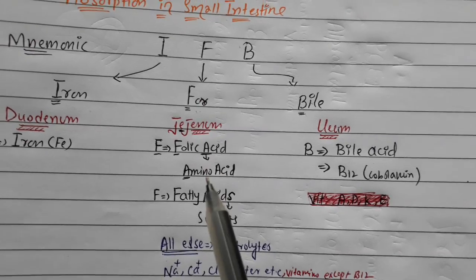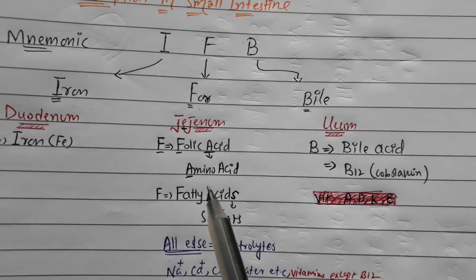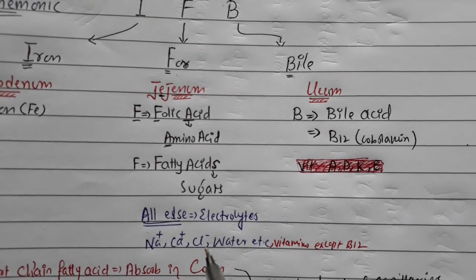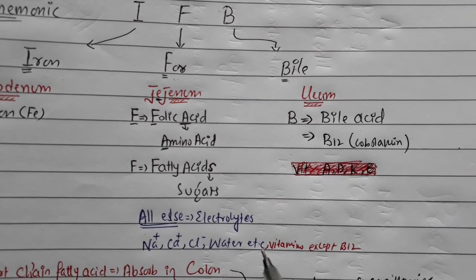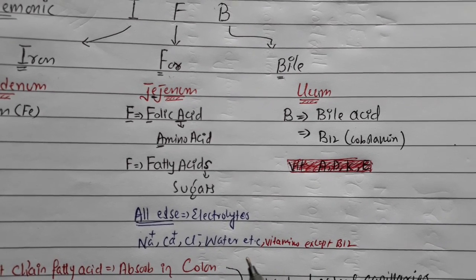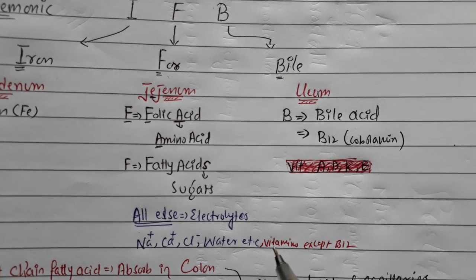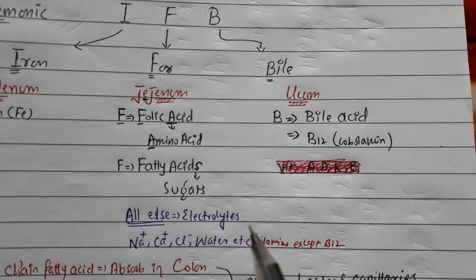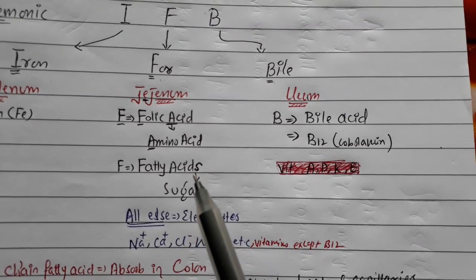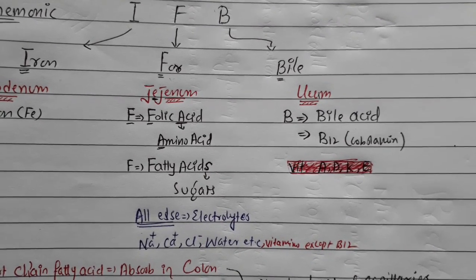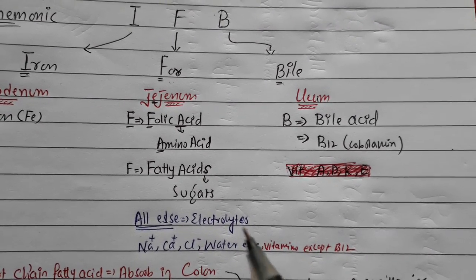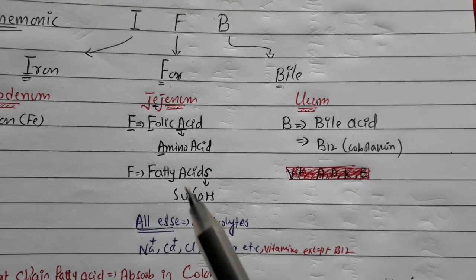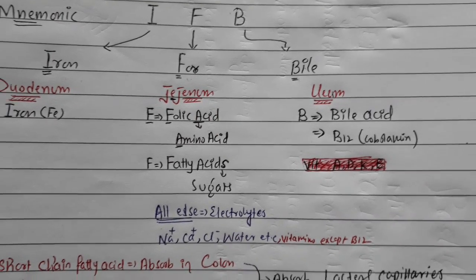Everything else — electrolytes like sodium, chloride, and potassium, water, calcium, and all vitamins except vitamin B12 — is absorbed in the jejunum. So electrolytes and water are absorbed in the jejunum.